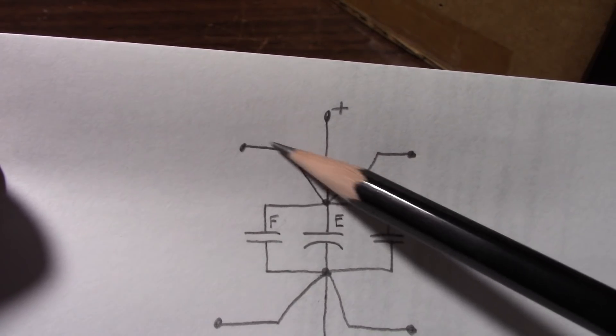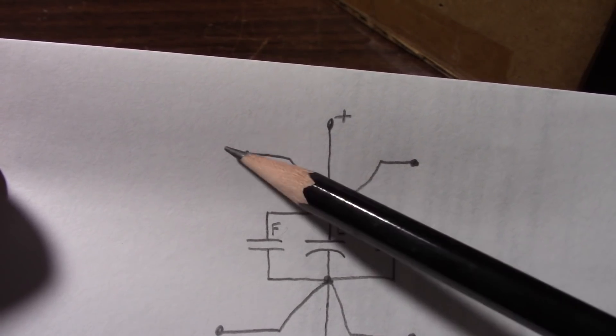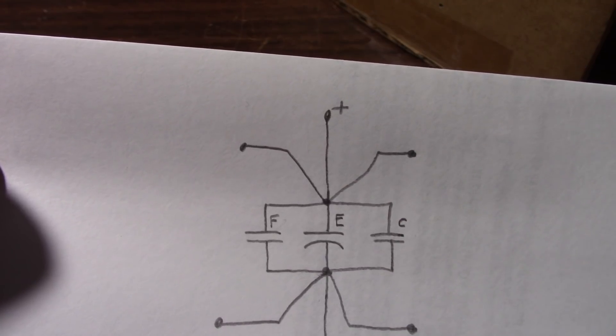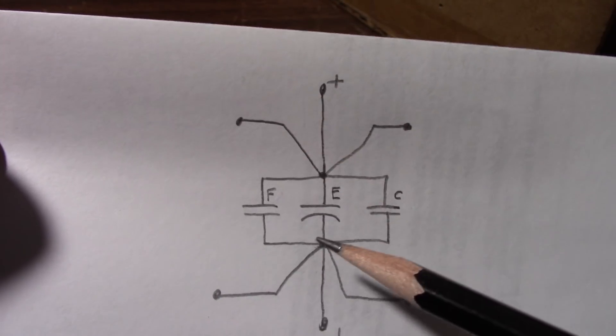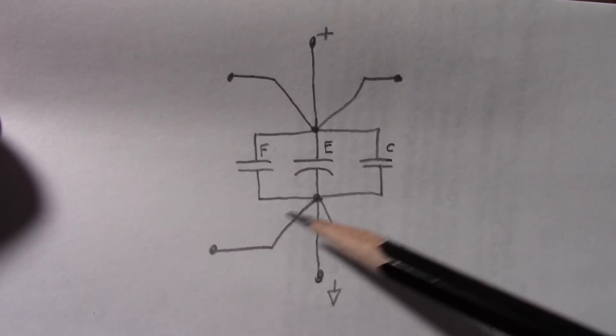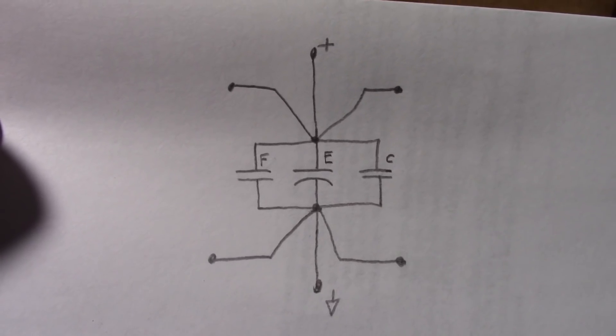And that's true on the positive side and the negative or ground side. As some amps are bipolar, they have a positive and a negative supply rail.